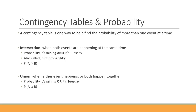An intersection is when both events are happening at the same time. For example, that's the probability that it's raining and that it's Tuesday. This can also be called joint probability, and we write it as the probability of A and B, where that upside-down U is our 'and' sign.